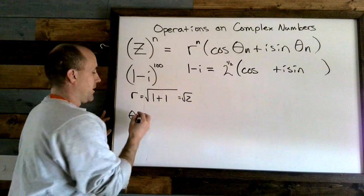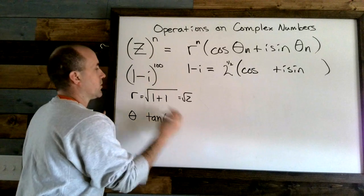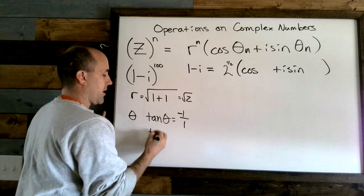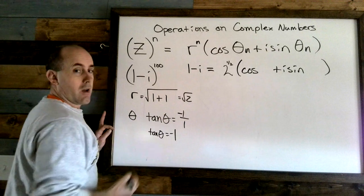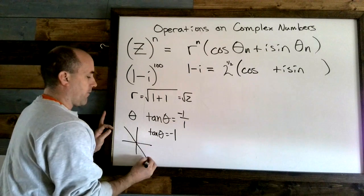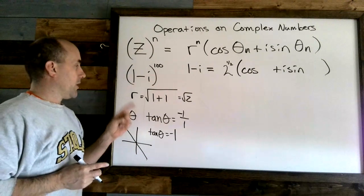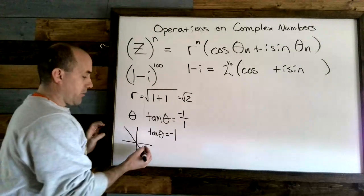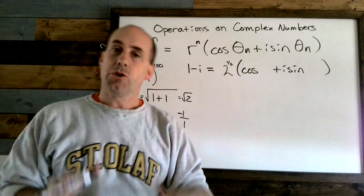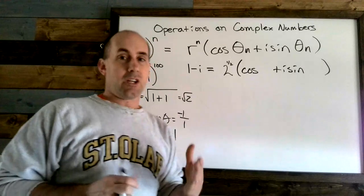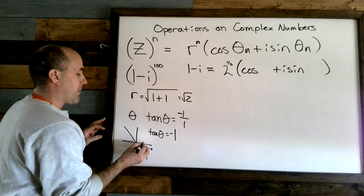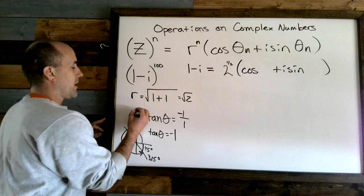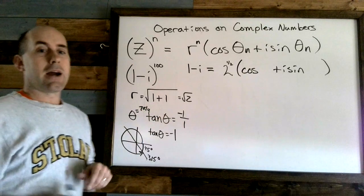To find theta, tangent of theta equals b/a = −1/1 = −1. Tangent is negative in the second and fourth quadrants. Graphing 1 − i, you go over 1 and down 1, placing you in the fourth quadrant. Tangent equals 1 at a 45-degree angle, so this angle is 315 degrees, or in radians theta equals 7π/4.